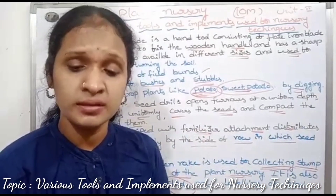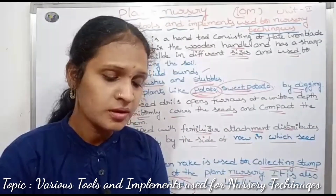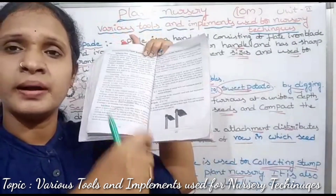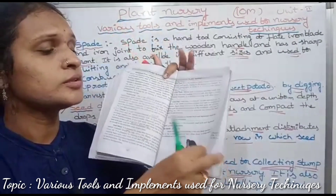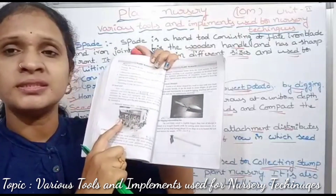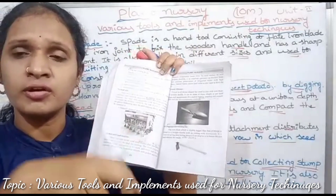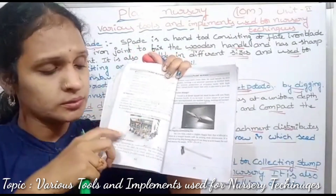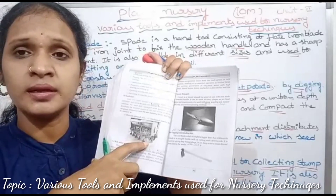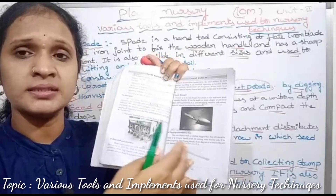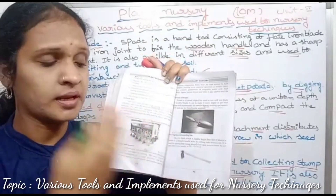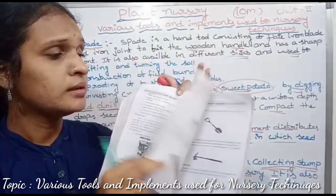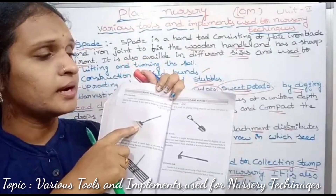Now I will show the pictures of these three types of tools. First, this is the spade. Next, this is the seed drill. And this is the garden rake.